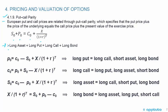We can see that S0 — long the asset — plus P0 — long the put — equals long the call plus long a bond. You absolutely have to memorize that equation: S0 plus P0 equals C0 plus X over (1 plus R) to the power of T.